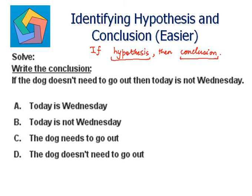This means that the statement followed by 'if' is our hypothesis and the statement followed by 'then' is our conclusion. So, here the statement followed by 'then' is 'today is not Wednesday.' So, this is our conclusion. We can say B — today is not Wednesday is the answer.